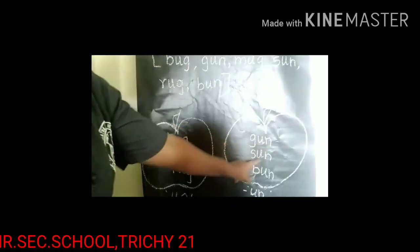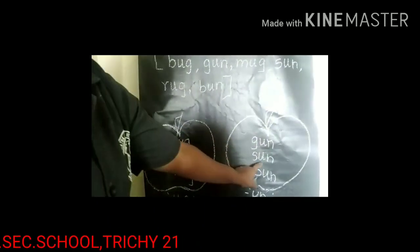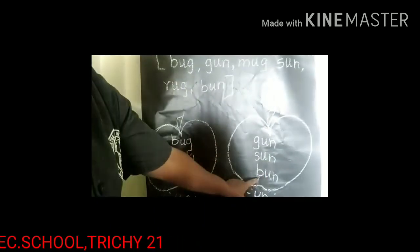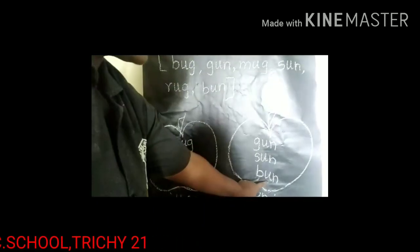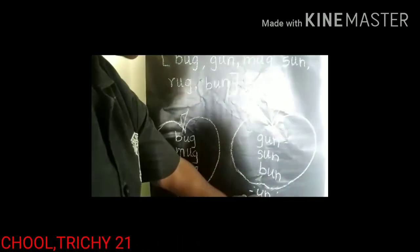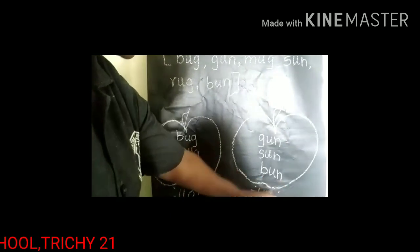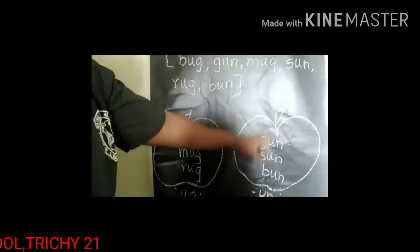And here: G, U, N — Gun. S, U, N — Sun. B, U, N — Bun. These all contain Un family words. Ok kids, thank you for listening. We will meet in the next class. Bye!